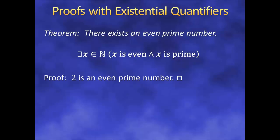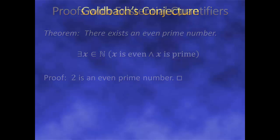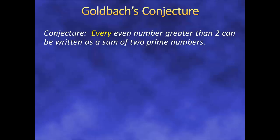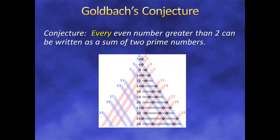Proofs with existential quantifiers are easy, aren't they? Except sometimes they're not. Sometimes, in fact often, finding something that satisfies your condition is the hard part. Recall Goldbach's conjecture — that every even number greater than 2 can be represented as a sum of 2 prime numbers. That's a universal quantifier, so to prove the conjecture true, we'd need to show it's true for an arbitrary x. But to prove it false, since the opposite of a universal quantifier is an existential quantifier, we'd need to find an even number greater than 2 that can't be represented as a sum of 2 primes. But nobody has found such a counterexample, and we've tried up to 4 quintillion.